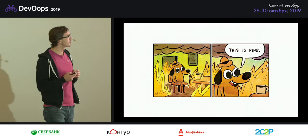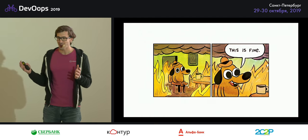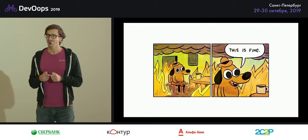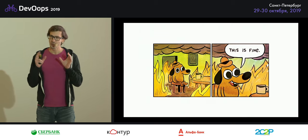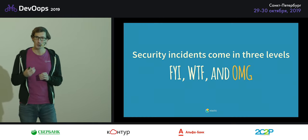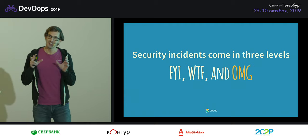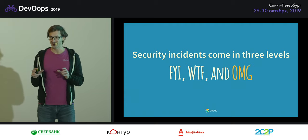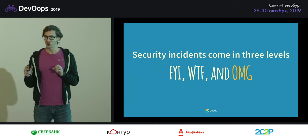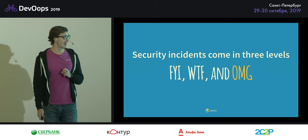Oftentimes security looks like this: we say everything is fine, and we don't even know what is on fire — but probably something is on fire and we just accept it. I would generally put security incidents into three different groups: FYI, what the f*ck, and oh my god. These are the security incident levels you might run into, and we want to figure out where we are and how bad it's going to be.